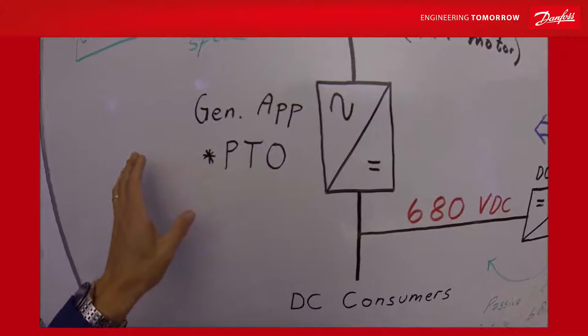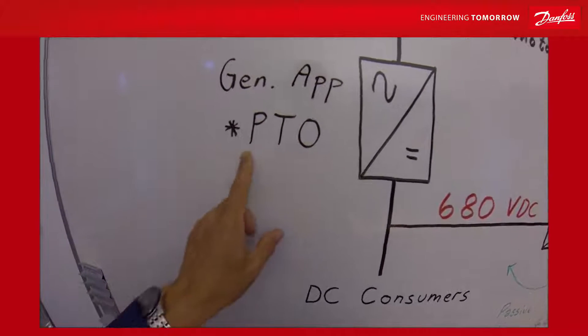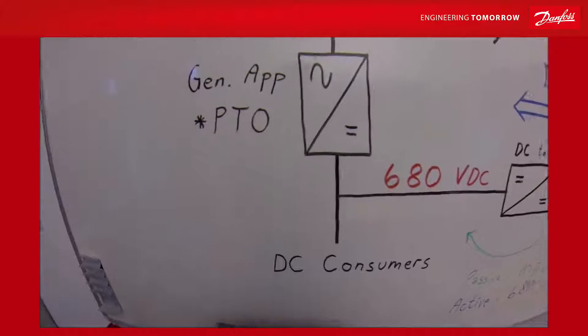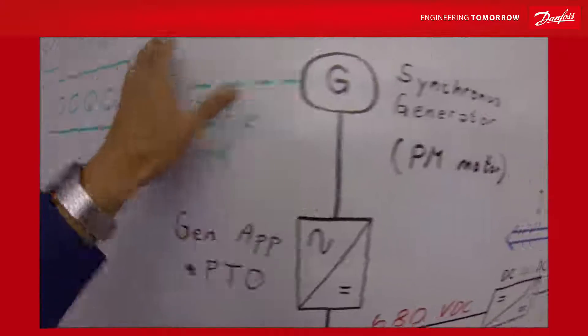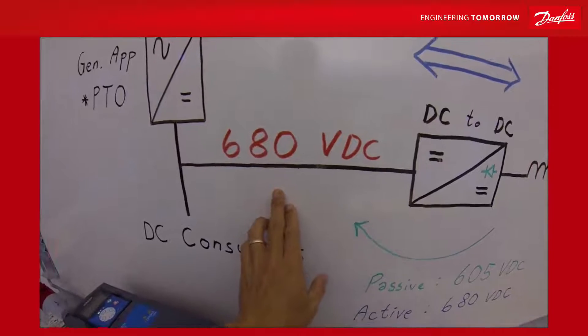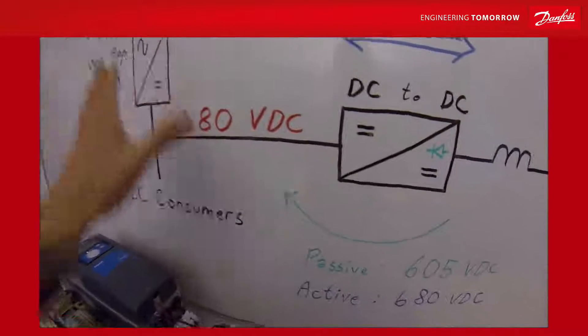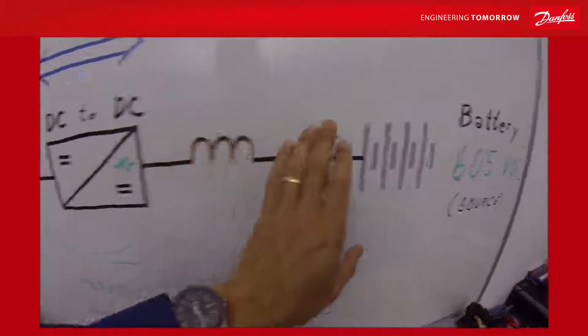And now we have replaced the active front end with a generator application. Right now put into power take out mode. Now this generator application produce 680 volt DC. And we are going to utilize this voltage and energy source to charge the battery.